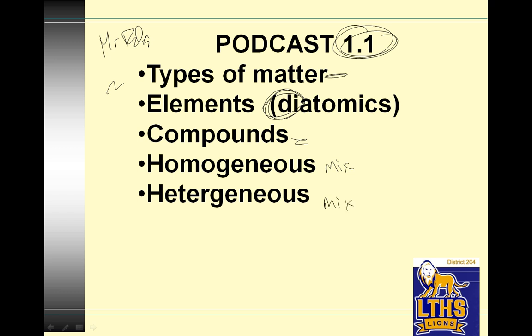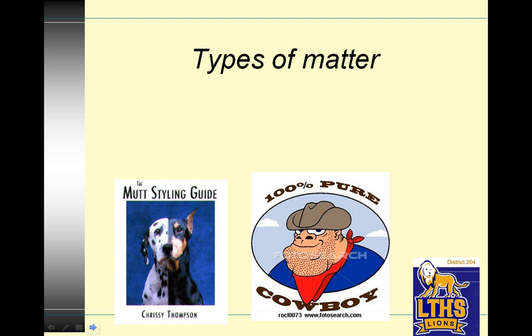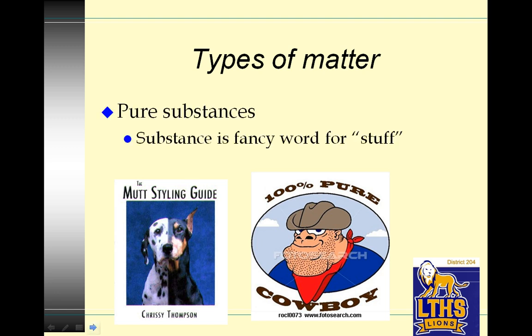I want to remind you you should write down everything that I write down and the stuff that's here, unless it's clearly a joke. So let's hop right into it. Types of matter. There are pure substances, and substance is a fancy word for stuff. So it's pure stuff, and then there are mixtures.